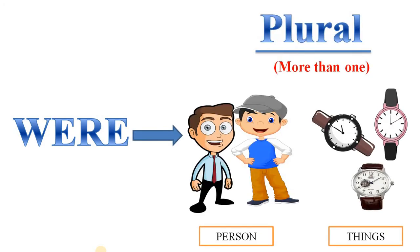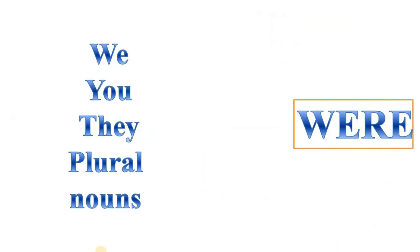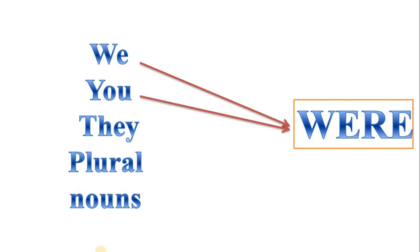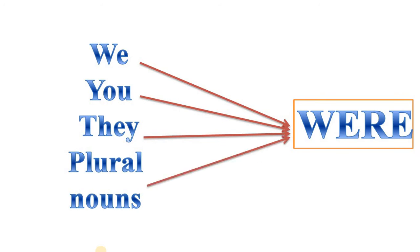Now, next is 'were'. 'Were' is used when we talk about more than one person or thing — with all plural nouns. Look here: we were, you were, they were, and with plural nouns. Plural nouns means when we talk about more than one person, animal, place, or thing.